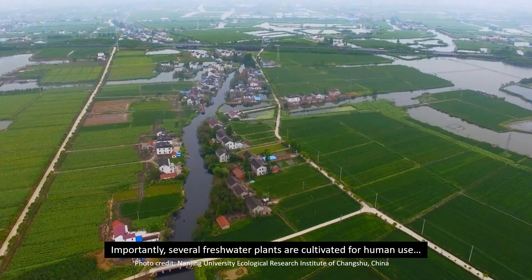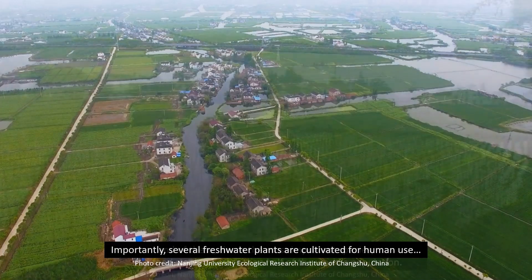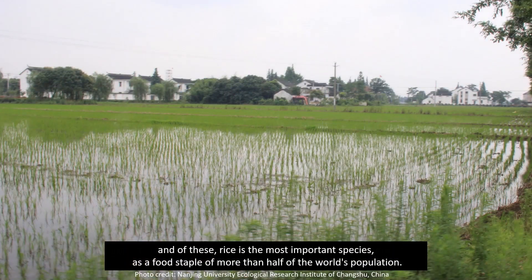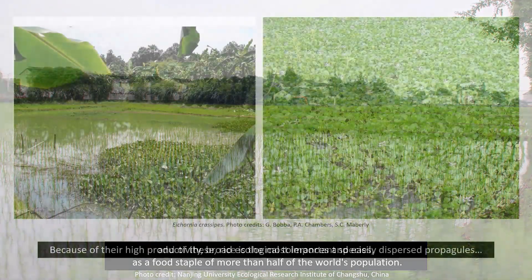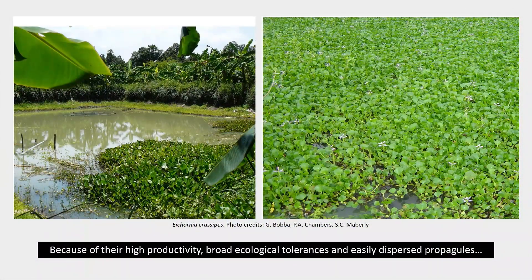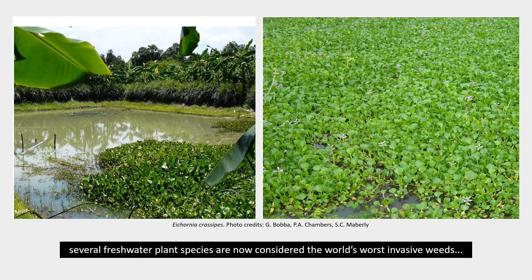Several freshwater plants are cultivated for human use, and of these, rice is the most important species, as a food staple of more than half of the world's population. Because of their high productivity, broad ecological tolerances, and easily dispersed propagules, several freshwater plant species are now considered the world's worst invasive weeds.